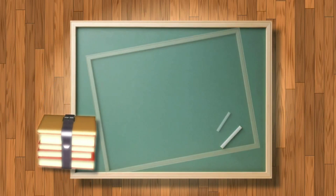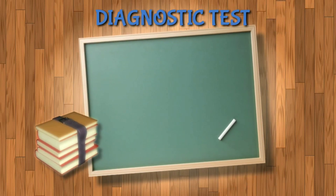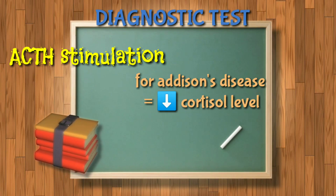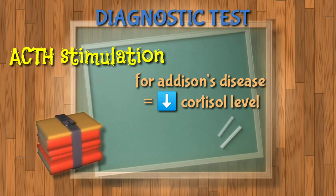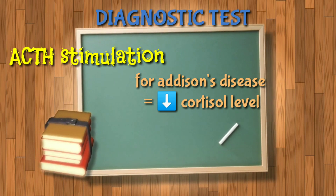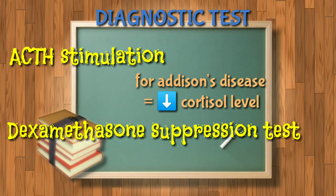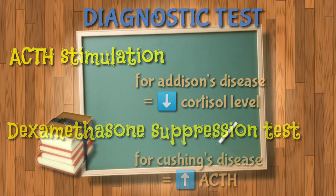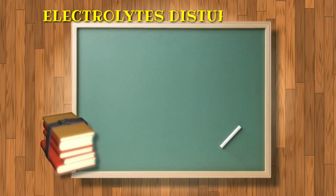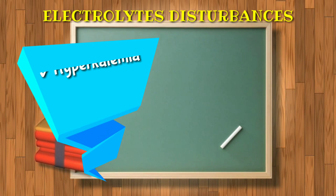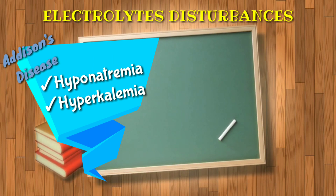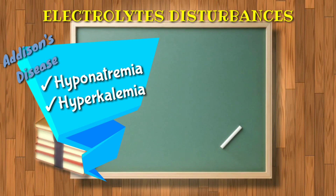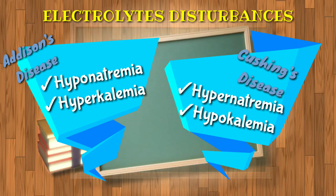So how would we know if a patient has these disorders? We have a diagnostic test called ACTH stimulation for Addison's disease, which gives a result of decreased cortisol level. While in Cushing's disease, there is a diagnostic test called the dexamethasone suppression test, which gives a result of increased ACTH. Also, the electrolyte disturbances show hyponatremia and hyperkalemia for Addison's disease — decreased sodium and increased potassium. While in Cushing's disease, there is hypernatremia and hypokalemia.